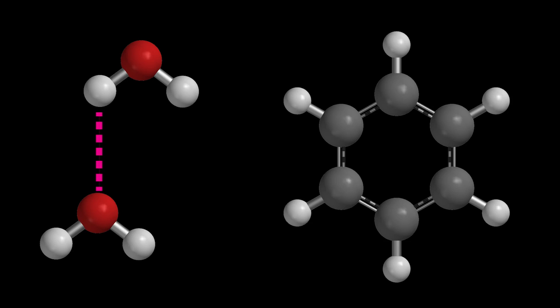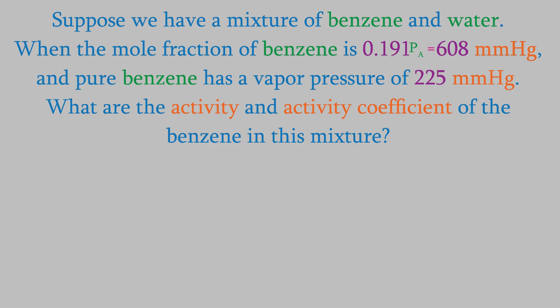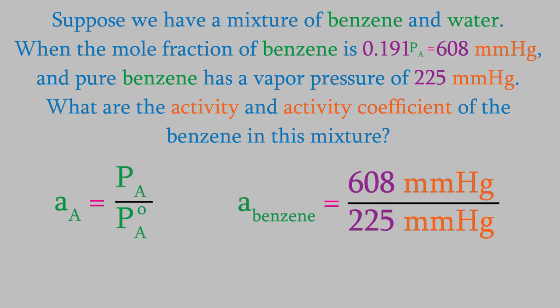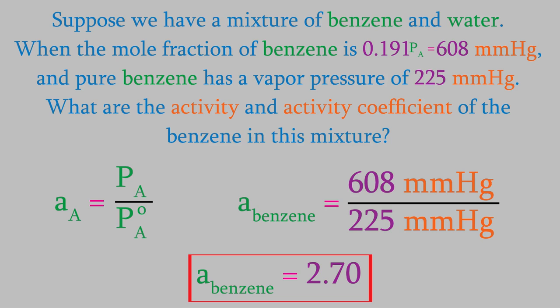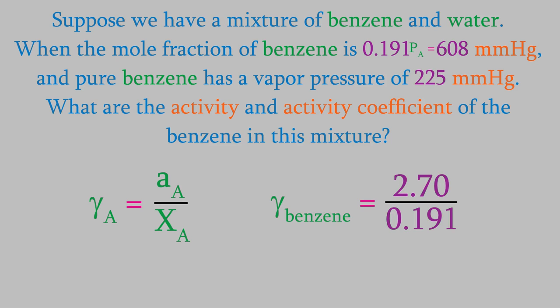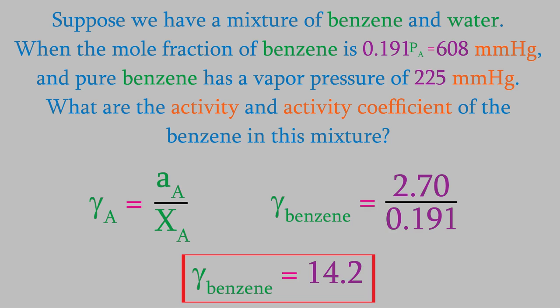Let's see if that's true. The benzene in a benzene-water mixture has a vapor pressure of 608 mmHg when the mole fraction of benzene is 0.191. However, at the same temperature, the vapor pressure of pure benzene is 225 mmHg. What are the activity and activity coefficient of benzene in this solution? To find the activity, we'll use this equation. If we plug in the vapor pressure of the solution and the pure compound, we find that the activity is 2.70. Now we'll calculate the activity coefficient using this equation. When we plug in the activity and the mole fraction, we find that the activity coefficient is 14.2. That's very far from 1, and that confirms our expectation that the mixture we're looking at is very non-ideal.